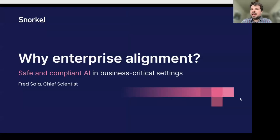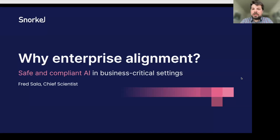First, we'll talk about why we care about enterprise alignment and why you should care. In a nutshell, a one-line definition of enterprise alignment is simple: we take alignment, which is broadly about AI systems that are safe and comply with policies, and we want to make sure we can do these for business, enterprise, and organization-level settings.